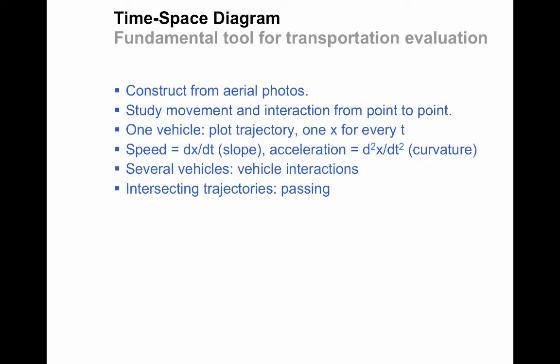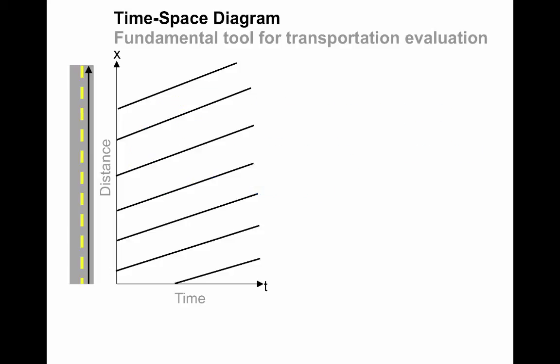When we have more than one vehicle on the diagram, we can look at their interactions. You might have two trajectories that intersect, and that basically means that passing has occurred.